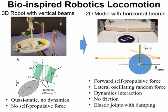So here we started with a simplified 2D model with horizontal beams. The body shape is also simplified to a circle with forward self-propulsive force and lateral random force. To make things easier, there is also no friction.